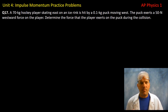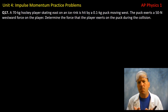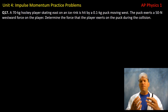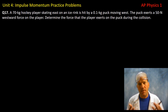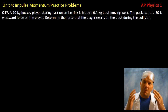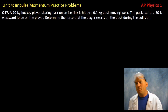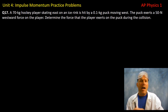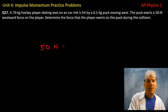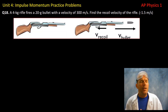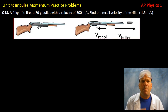Question seventeen: a 70-kilogram hockey player is hit by a 0.1-kilogram puck moving west. The puck exerts a 50-newton westward force on the player. By Newton's third law, the player exerts a 50-newton eastward force back onto the puck during the collision. Always be mindful of Newton's third law force pairs.